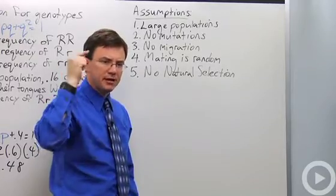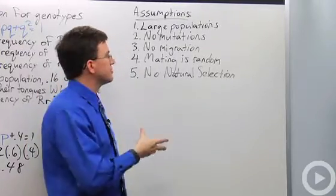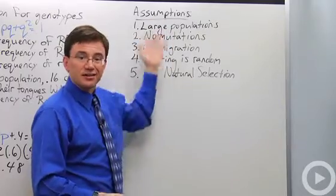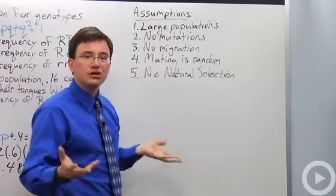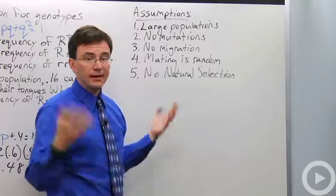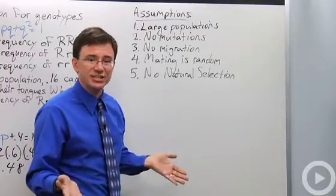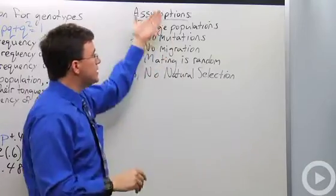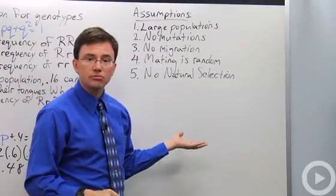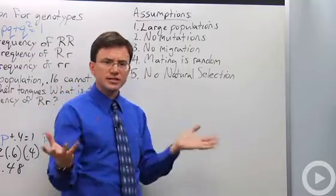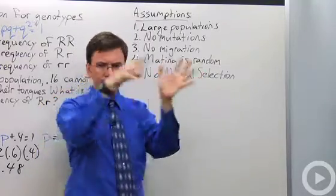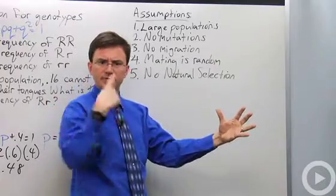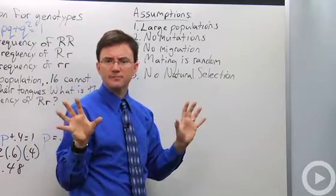And I'm betting you're thinking in your head what I used to think when I first started this stuff. Most of the time one of these is going to be violated and if not more. So why ever use the Hardy-Weinberg equation? I used to think that even when I was teaching it until one of my colleagues explained to me exactly why this is so useful. This gives us our control group. Because, you know, in an experiment you always need to have your control group and your experimental group. Your control group is just like your experimental group except for hopefully one thing is different.